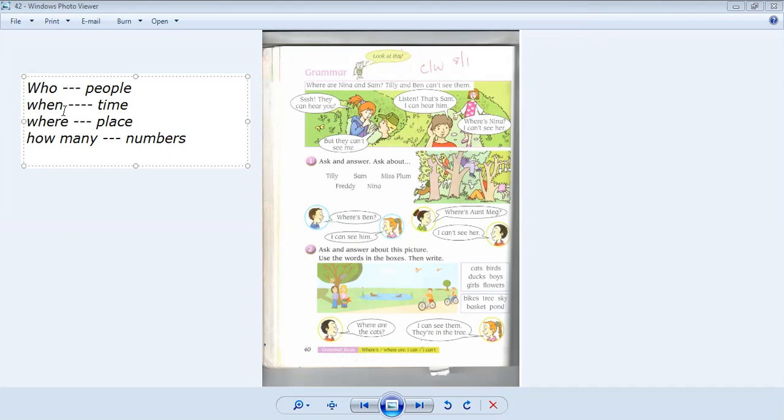We use 'when' for asking about time. We use 'where' for a place, for asking about places. For example, where do you live? We use 'how many' for asking about the numbers, the numbers of things.